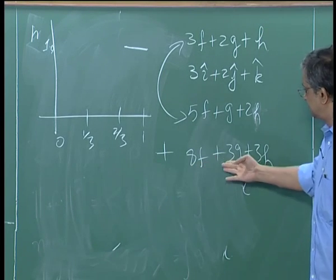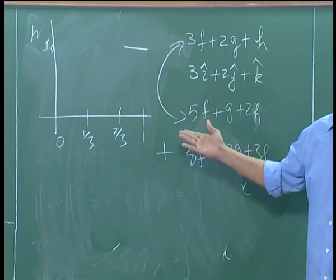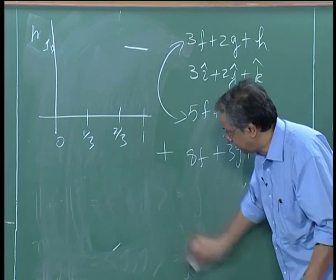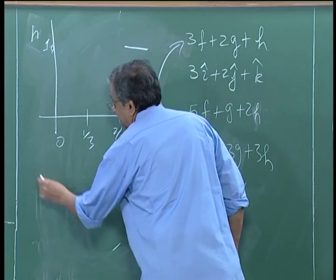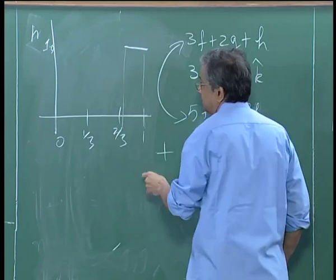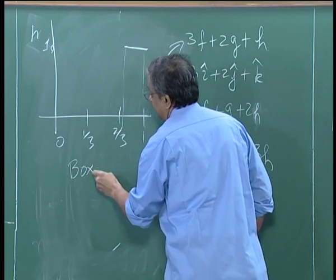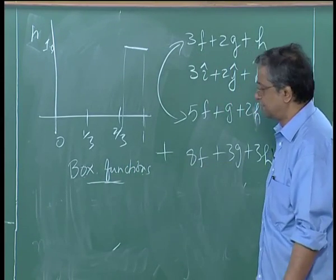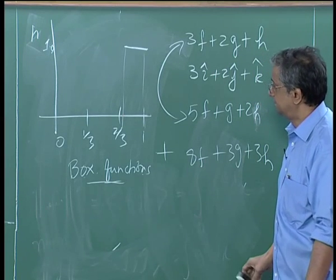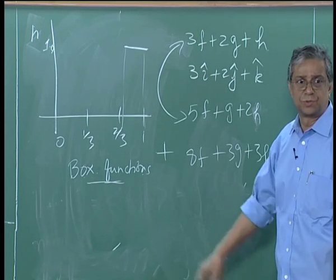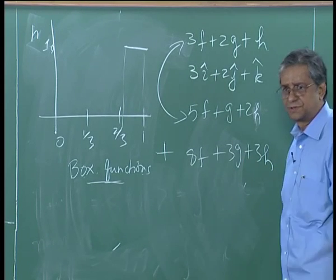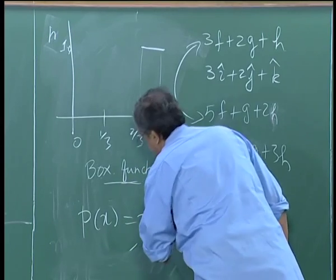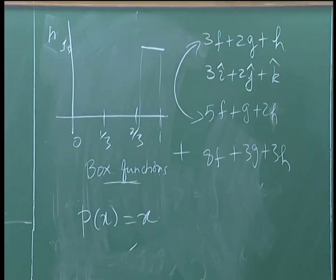How well does this work? We have defined functions that look somewhat like a box — they are called box functions. On any interval, I can define any number of box functions. It looks like I can represent functions on [0,1] using these box functions. We will pick a simple function to try: consider p(x) = x.